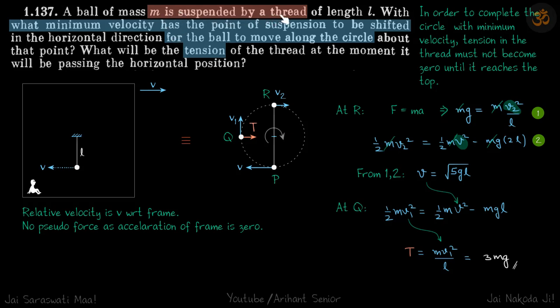A mass is suspended by a thread of length L. What minimum velocity has the point of suspension to be shifted for the ball to move along a circle and what will be the tension when it is passing in the horizontal position.